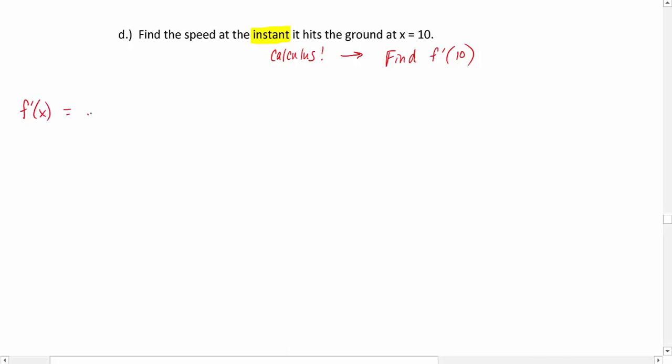So let's find f'(x). This will be the limit as h approaches 0 of f(x + h) - f(x) all over h. So that's the limit as h approaches 0 of 160 times (x + h) minus 16 times (x + h)² minus our original function, 160x - 16x², all over h.